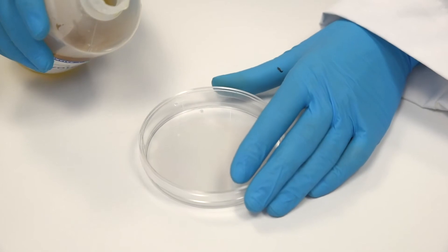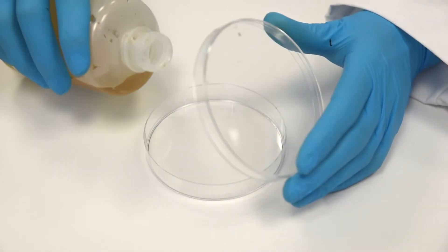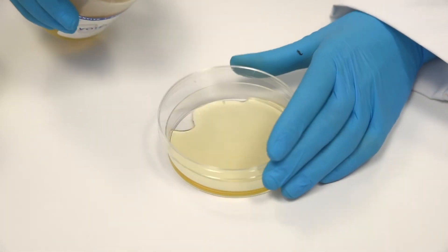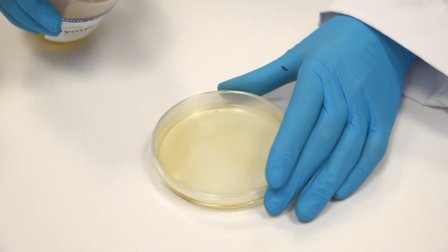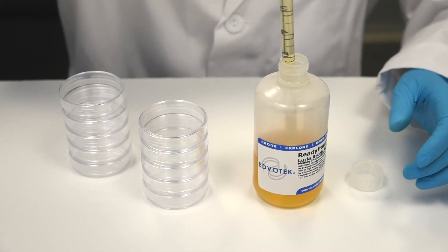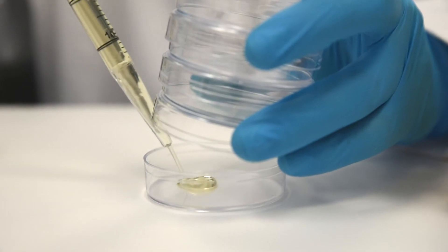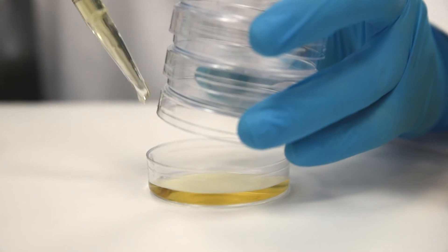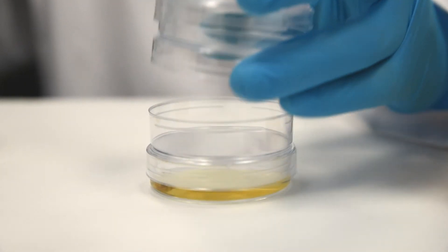If you do not have a pipette pump, you can pour the plates directly from the bottle. Pour slowly until the bottom of the plates are just barely covered with a thin layer of LB agar. Step 7: Using the same 10 ml pipette, pour 10 small control plates by pipetting 5 ml of the cooled ready pour agar from the small bottle into each of the 10 small unlabeled petri dishes.